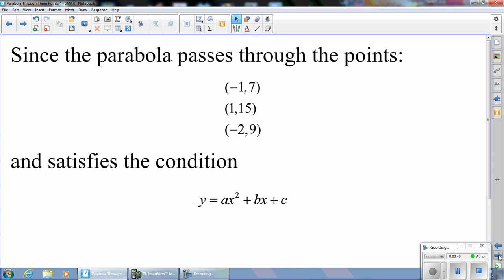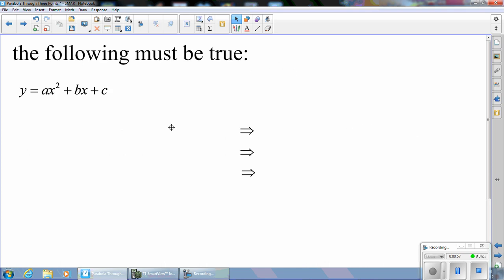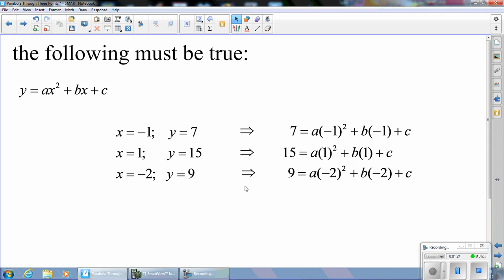Since it goes through those three points and satisfies the condition y equals ax squared plus bx plus c, the following must be true. When x equals negative 1, y equals 7. In other words, 7 equals a times negative 1 squared plus b times negative 1 plus c. We are substituting the values negative 1 for x and 7 for y. Looking at the other two points, when x equals 1, y equals 15 gives us this equation. And finally, when x equals negative 2, y equals 9 gives us this equation.